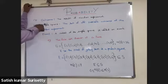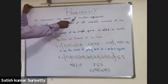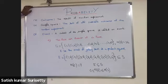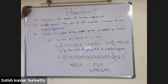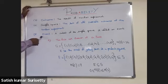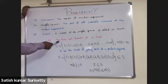The result of a random experiment is called an outcome. The set of all possible outcomes of a random experiment is called the sample space. A subset of the sample space is called an event.